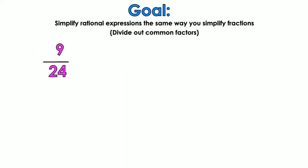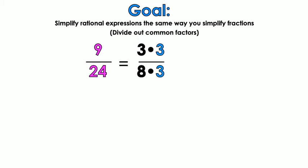Your goal is to simplify, just like you simplify fractions. So let's say I have 9 over 24. If I have 9 over 24, when you simplify that, what would you divide the top and the bottom by? You would divide it by 3. What you're really doing is you're splitting 9 into 3 times 3, and splitting 24 into 8 times 3.